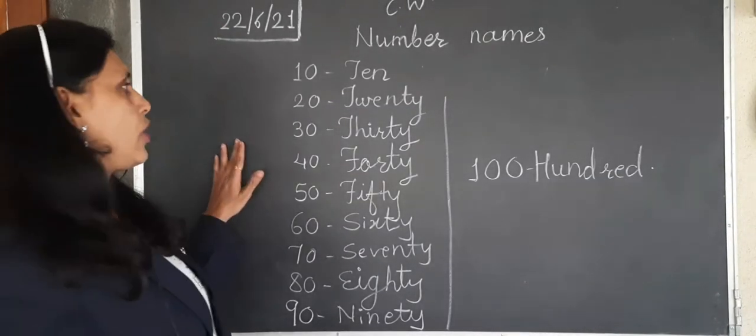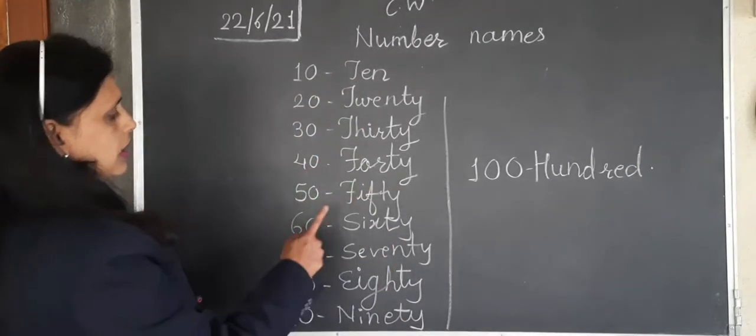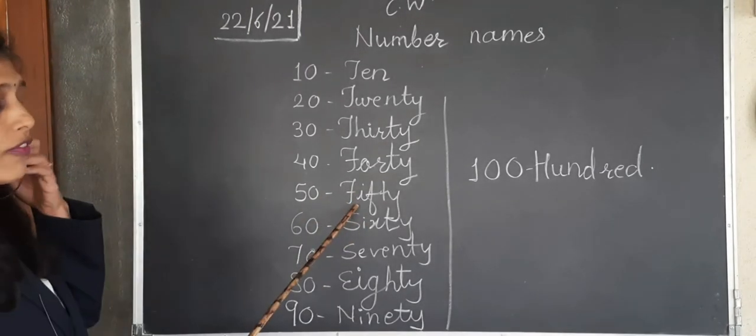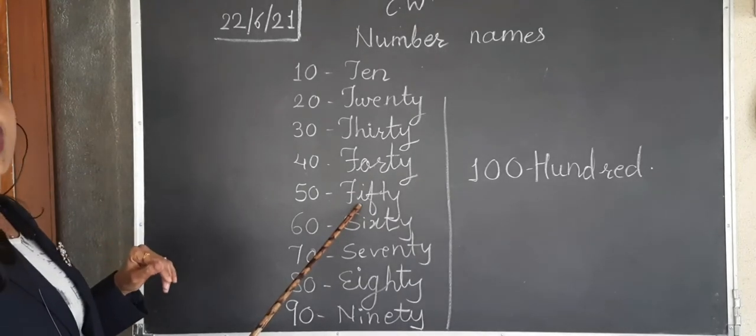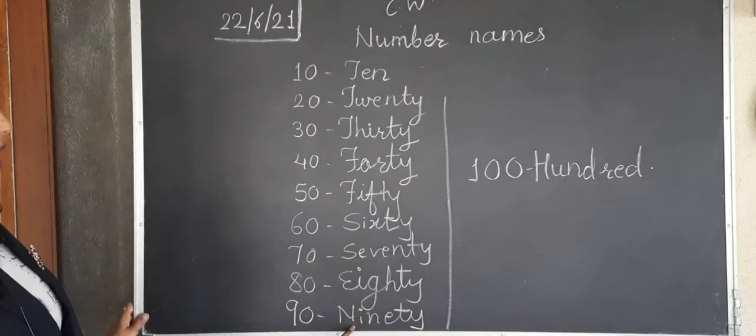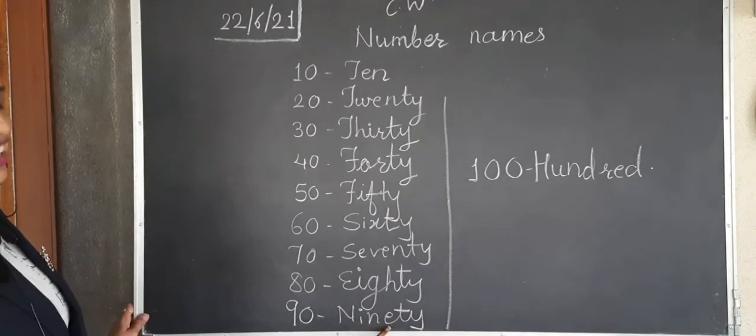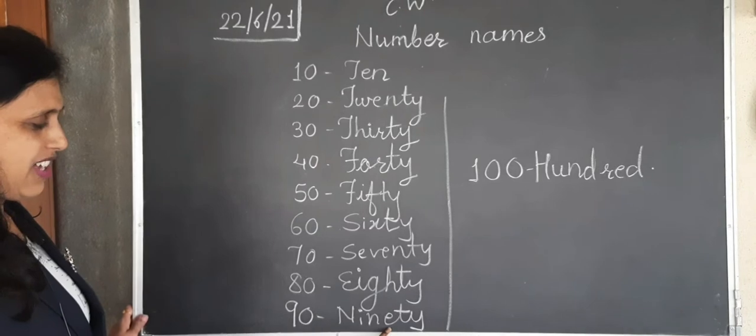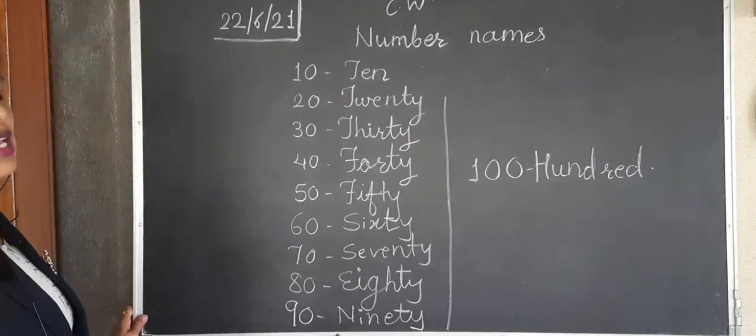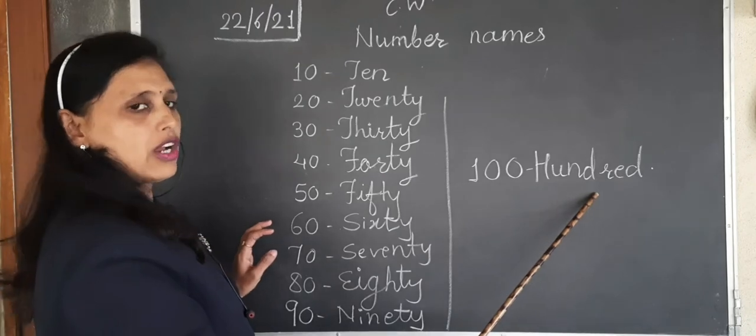We will write 10 to 100 numbers. Students, like this way you have to write in your notebook. 10, 20, 30, 40, 50. Some students are writing it incorrectly. Remember how to write fifty. Then 60, 70, 80, 90. Here also some students are making mistakes, they are eating this E. You should not eat E. You have to write N-I-N-E-T-Y. Here I don't have space, so I have written 100 here. So the last number is 100. Write it in your notebook.